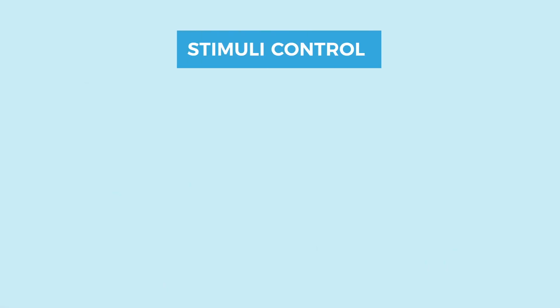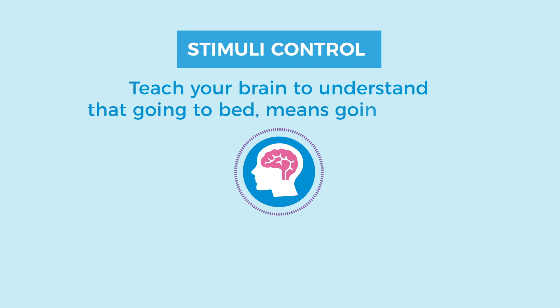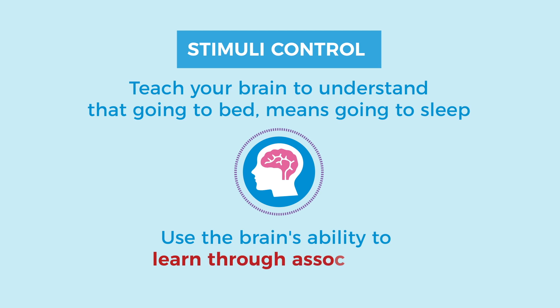In this module you'll learn a different technique that you can use in combination with sleep restriction, called stimuli control. The essence of stimuli control is to teach your brain to understand that going to bed means going to sleep. To do this effectively, we're going to use your brain's ability to learn through association.